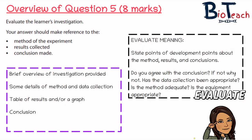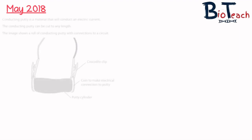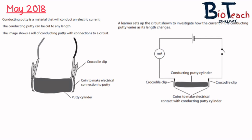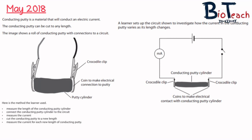In true BioTeach fashion, I've designed this video to walk you through some past exam questions. The first one is from May 2018. The experiment is designed to measure the current going through a roll of conducting putty as its length is changed — they cut the putty to different lengths. We're given the experiment setup, a circuit diagram showing how the conducting putty cylinder is connected, and the method the learner used: measure the length of the putty, connect it to the circuit, cut it to a new length, and measure the current for each new length.